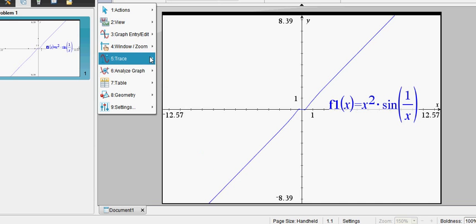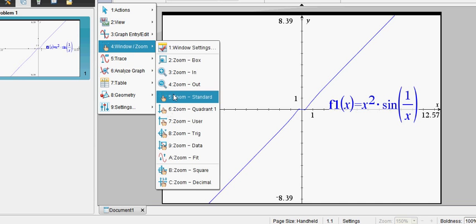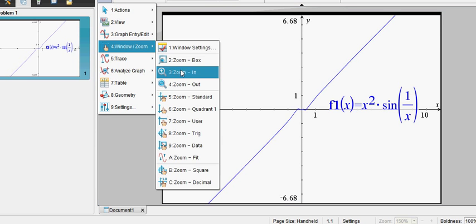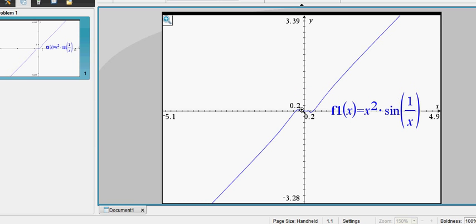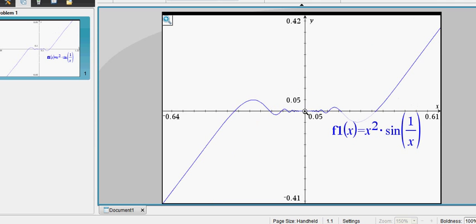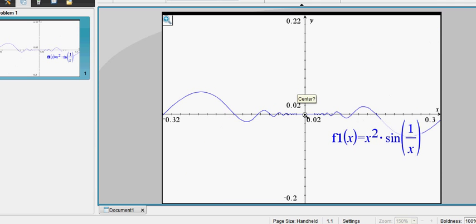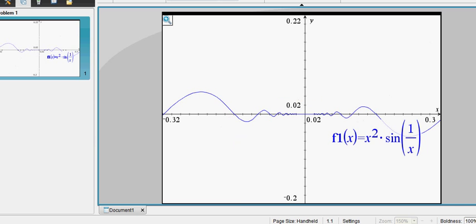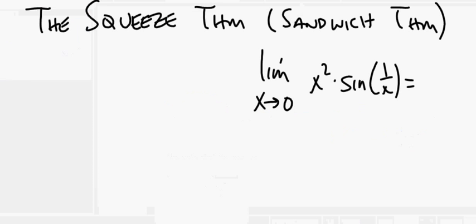Nope, it doesn't help. I'll just zoom in where I'm looking. It would appear that that function is getting closer and closer to 0, would it not? Great. But the question is, how do you prove that? How do you prove that? Because as x is getting closer and closer to 0, this is getting bigger and bigger and bigger.